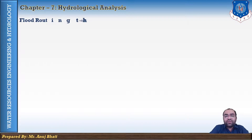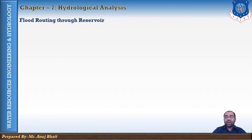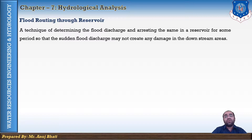What is flood routing? Flood routing is the process of determining the reservoir storage volume and outflow rates and rise of water level in the reservoir corresponding to any inflow during any peak flood discharge. The flood routing may be defined as a technique of determining the flood discharge and arresting the flow in a reservoir for some period so that the sudden flood discharge may not create any damage in the downstream areas.